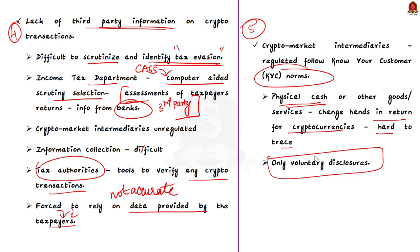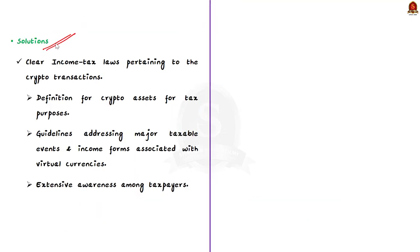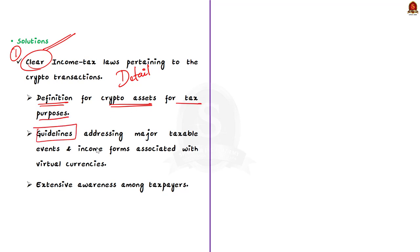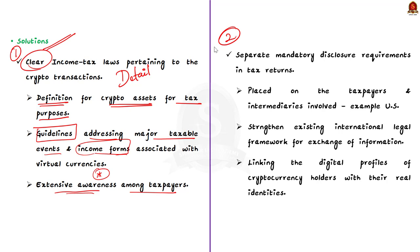So far we have seen the challenges in taxing cryptocurrency. Now we will discuss some of the solutions suggested by the author. Firstly, the income tax laws pertaining to crypto transactions need to be made clear by incorporating detailed statutory provisions. This could include a definition for crypto assets for tax purposes, guidelines addressing major taxable events and income forms associated with virtual currencies, followed by extensive awareness generation among taxpayers. Secondly, there should be mandatory disclosure requirements in tax returns placed on taxpayers as well as all intermediaries involved, so that crypto transactions do not go unreported — as is even followed in the US.